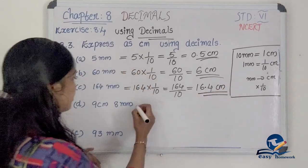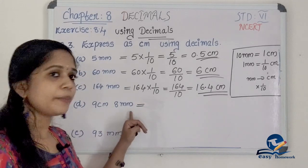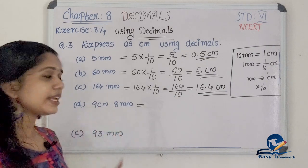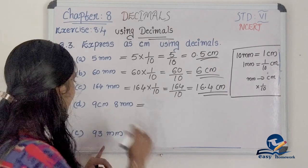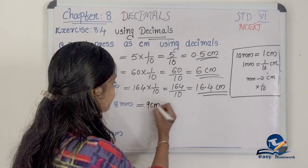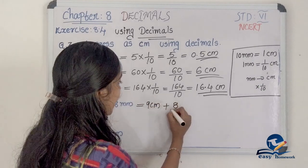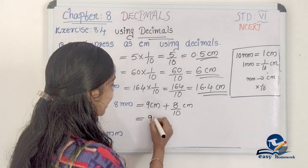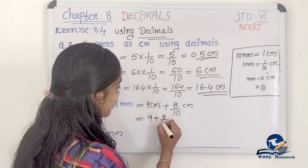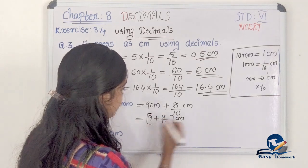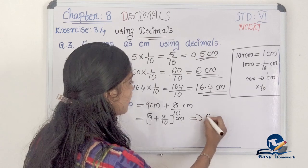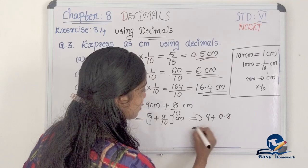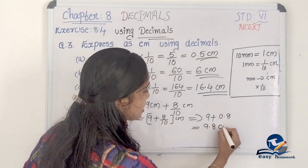Next question: 9 centimeter 8 millimeter. We add 9 cm plus 8 by 10 cm, which is 9 plus 0.8, equal to 9.8 cm.